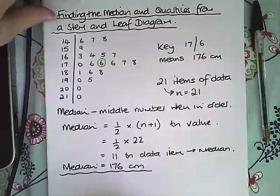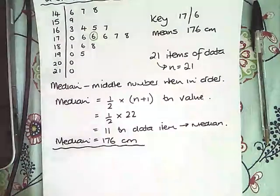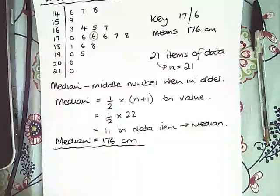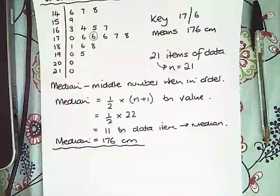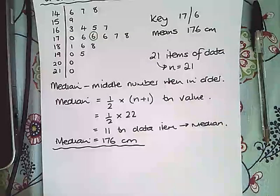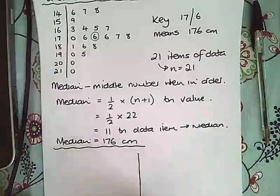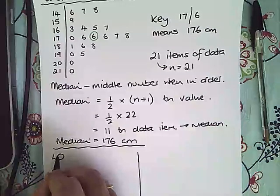Now if we want to find out about the central 50% of the data, again so that we're not affected by very large or very small values when we're considering the spread of the data, then we're looking for the upper quartile and the lower quartile. I'm going to deal with these two separately. So the lower quartile, that is a quarter of the way into the data.